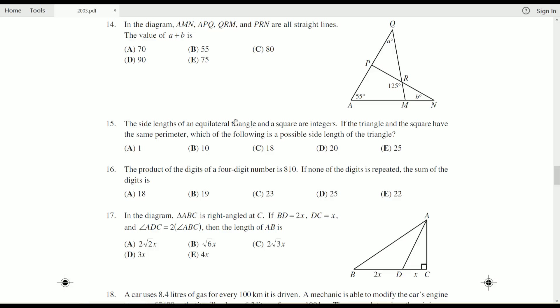The side lengths of an equilateral triangle and a square are integers. If the triangle and the square have the same perimeter, which of the following is a possible side length of the triangle.